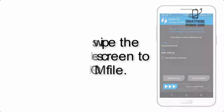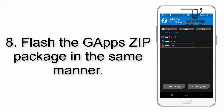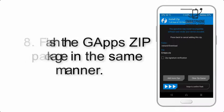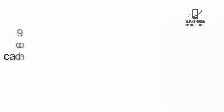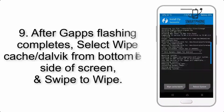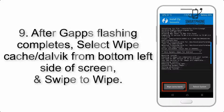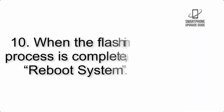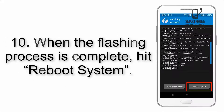Step 6: Navigate to the storage and select the ROM zip file. Step 7: Swipe the button on the screen to install the ROM file. Step 8: Flash the GApps zip package in the same manner. Step 9: After GApps flashing completes, select Wipe Cache and Dalvik from the bottom left side of the screen and swipe to wipe.